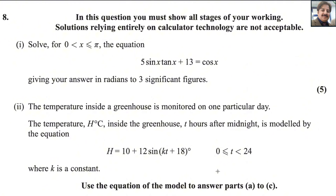In this question, you must show all stages of your working. Solutions relying entirely on calculated technology are not acceptable. For the first part, solve for 0 < x ≤ π the equation 5sinx·tanx + 13 = cosx, giving your answer in radians to three significant figures.